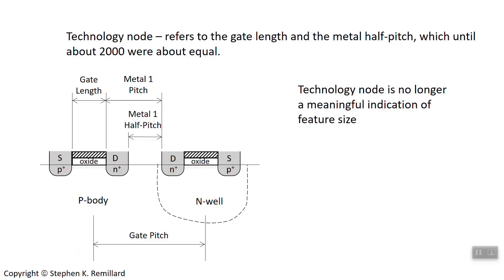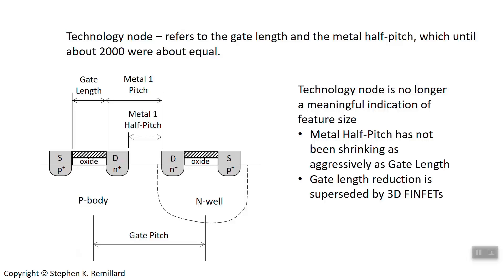Historically, gate length and metal pitch have been about the same. Until about the mid-90s, around 1995, the industry decided to focus on gate length, so gate length was more aggressively reduced than the metal pitch. To the point now that there's somewhere around a factor of three difference between gate lengths and metal pitch. Also, as we move into FinFETs with the latest technology nodes, the three-dimensionality is allowing greater circuit density without necessarily requiring a smaller gate length.